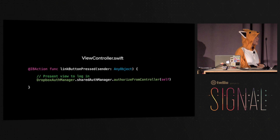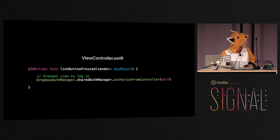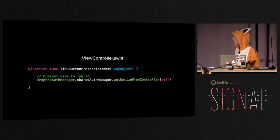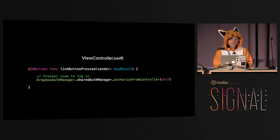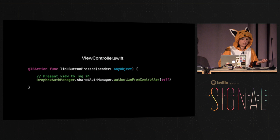Then here's where we actually do some action. Somewhere in your application when you link with Dropbox, you're going to want to say the user clicked some button that says 'link to Dropbox' or 'log in with Dropbox.' Then you want to present the way to log in — you saw that window pop up. So this is the code that does that: the shared auth manager authorizes from the view controller you're in.